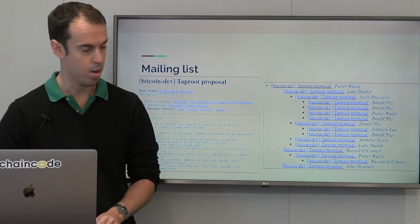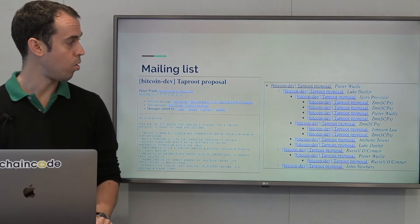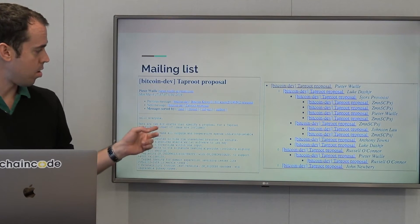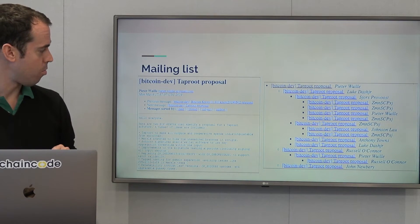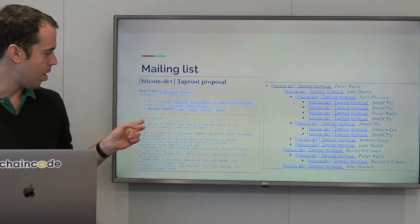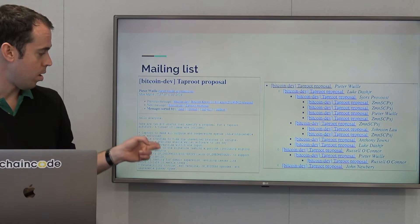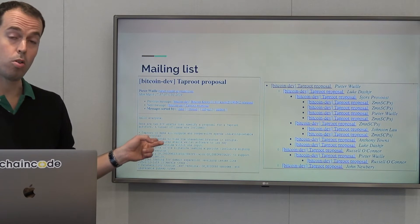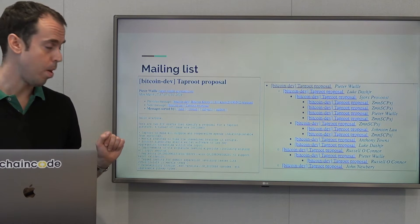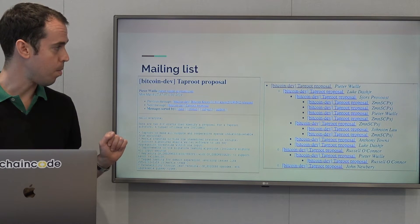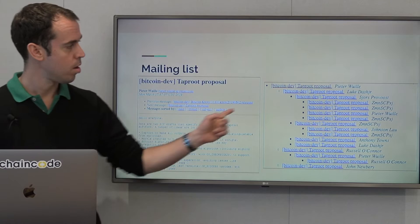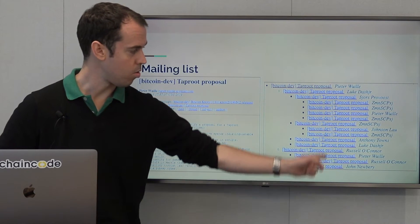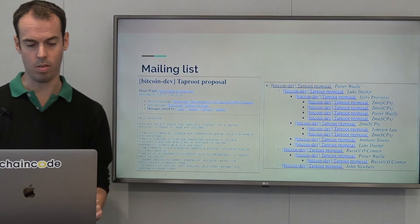The mailing list, as I said, is where all of this is discussed. Here's the original post from Peter Wuille back in May with the proposals for BIP Taproot and BIP Tapscript. And as you can see, there's already been quite a bit of discussion.